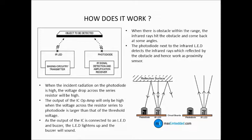When the incident radiation on the photodiode is high, the voltage drop across the series resistor will be high. The output of the IC op-amp will only be high when the voltage across the resistor series to photodiode is larger than that of the threshold voltage. As the output of the IC is connected to an LED and buzzer, the LED lightens up and the buzzer will sound.